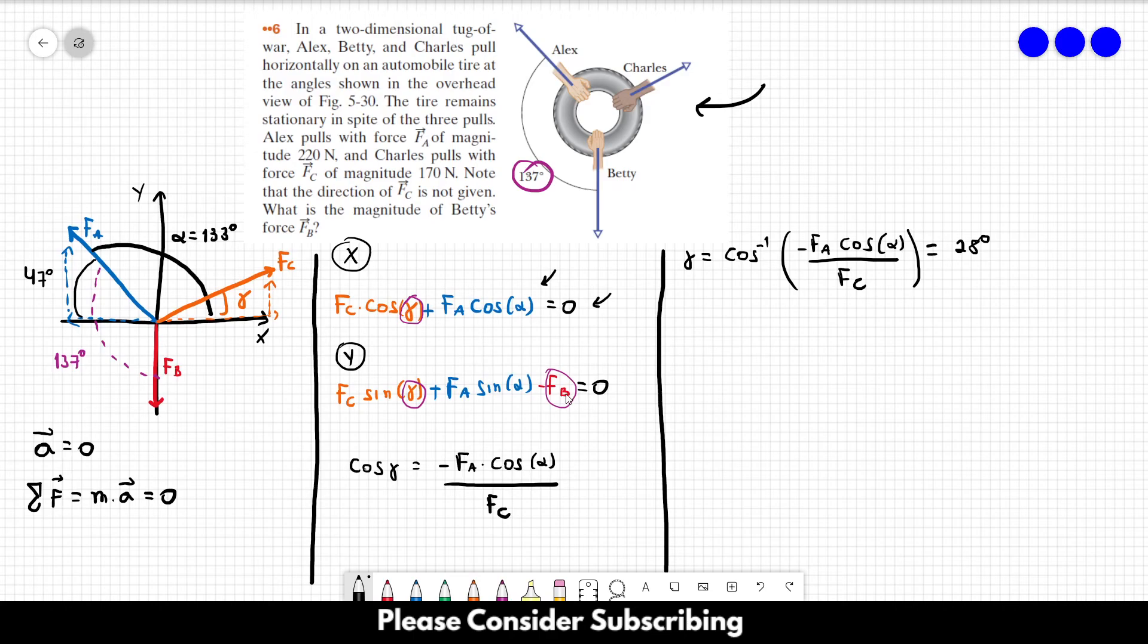And all we have to do is isolate FB in this equation over here. So FB is equal to FC sine of gamma plus FA sine of alpha. And just replacing the letters by the numbers, we can find that this is equal to 241 newtons. Remember that FC is equal to 170 newtons. Gamma is 28 degrees. FA is equal to 220 newtons. And alpha is 133 degrees. And then if you replace this, you would find 241 newtons.